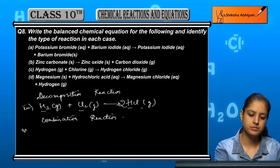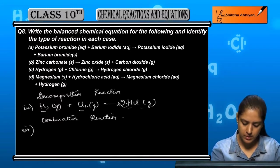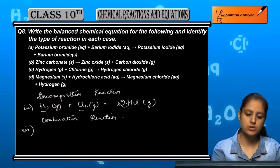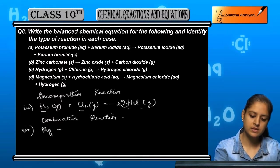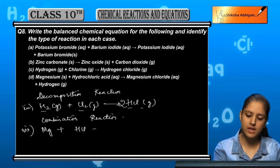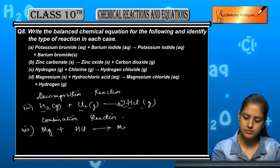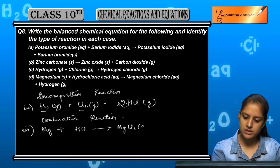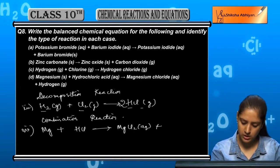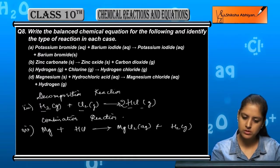Last, magnesium plus hydrochloric acid, that is Mg plus HCl, gives us magnesium chloride, MgCl2 aqueous solution and H2 gas.